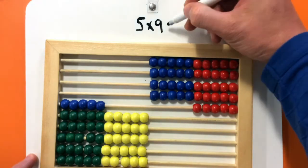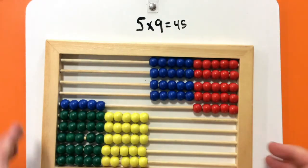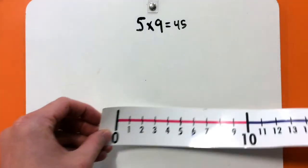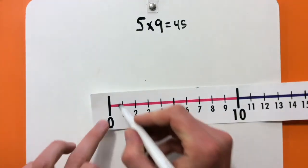So, 5 times 9 is 45. I can also use a number line. So, if I start at 0,